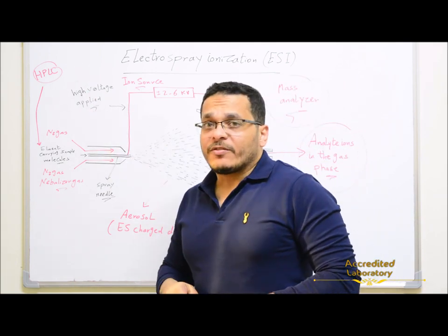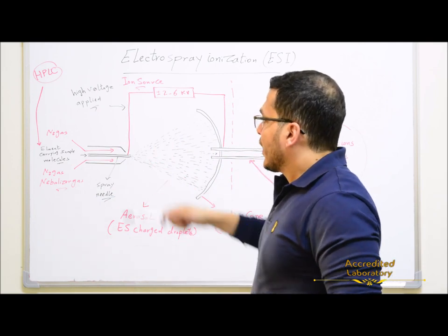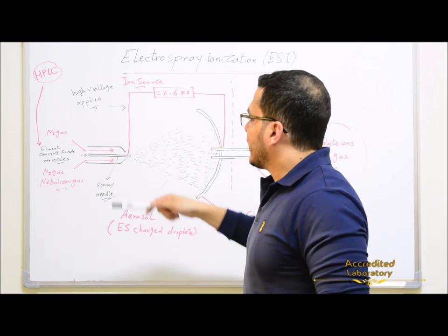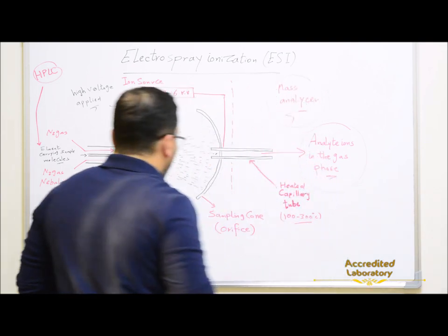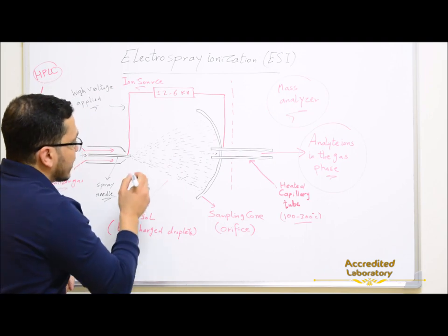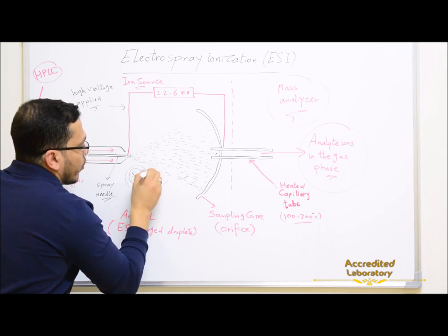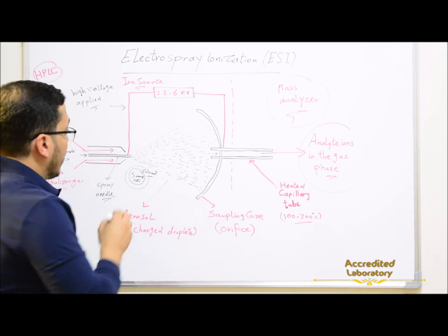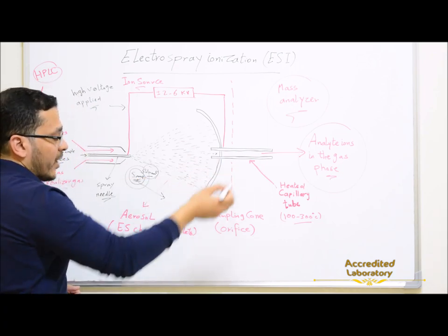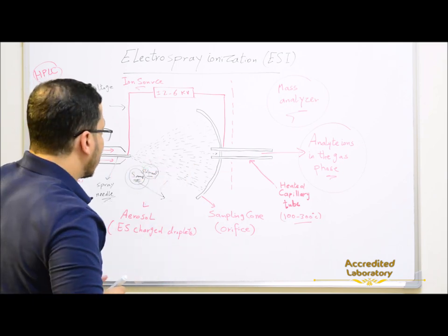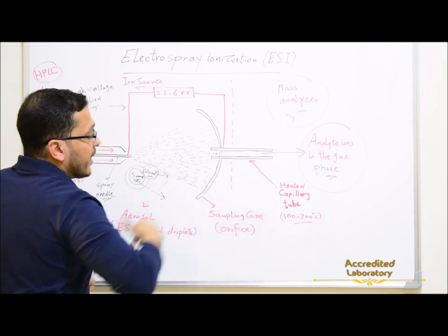From the HPLC mobile phase, the eluent carrying sample molecules is transferred through the needle. By the aid of an electric field and nebulizer gas or nitrogen gas, these eluent-carrying sample molecules are nebulized to produce charged droplets. These charged droplets consist of sample molecules surrounded by solvent molecules. Solvent molecules cannot pass to the mass analyzer; we only need sample ions to be transferred.